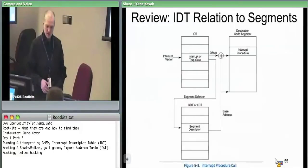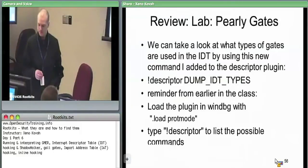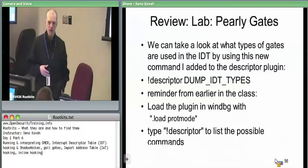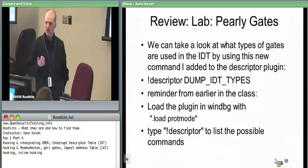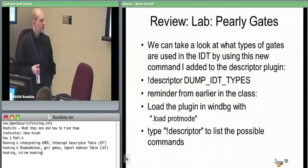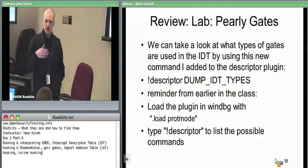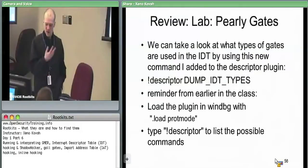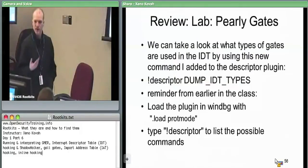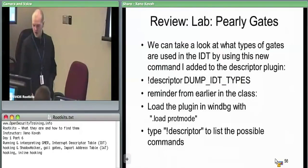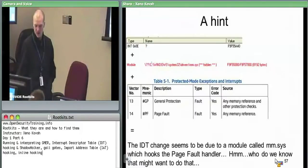In intermediate class, we did the Pearly Gates lab where we installed the descriptor plug-in into WinDbg. Its job was to dump the GDT or IDT. We could use WinDbg to go in and inspect the IDT and manually say something's off about it. But we don't really need to, because things like GMER will tell us this IDT entry is not pointing where it should be. So I have int E and the address which is actually being targeted - let's see in the VM.